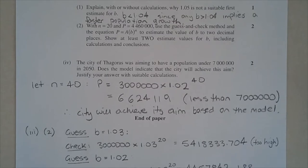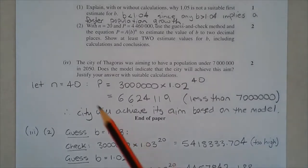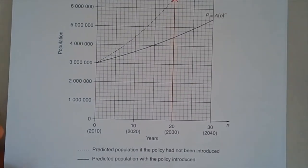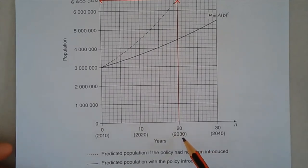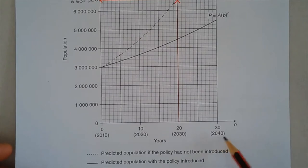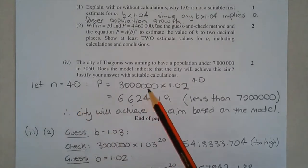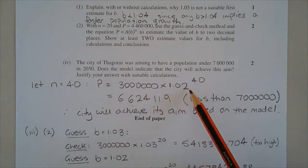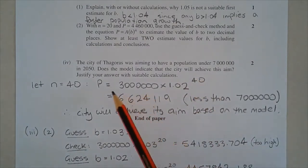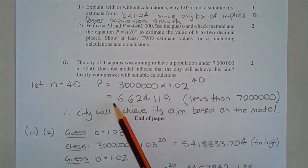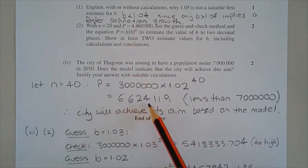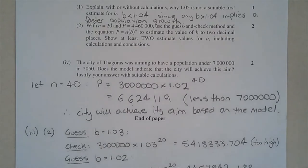Part four: the city aimed to have a population under 7 million in 2050. Does the model indicate the city will achieve this? Let n equal 40, since n equals 20 corresponds to 2030, n equals 30 to 2040, and n equals 40 to 2050. Using a equals 3 million and b equals 1.02: 3 million times 1.02 to the power of 40 equals 6,624,119, which is less than 7 million. Therefore the city will achieve its aim based on this model.